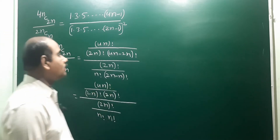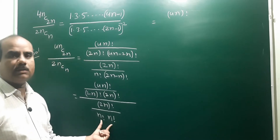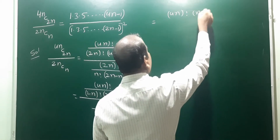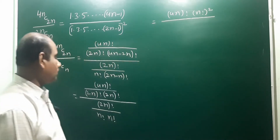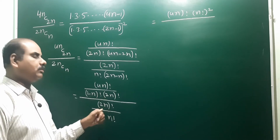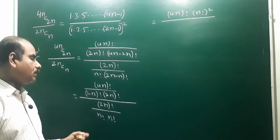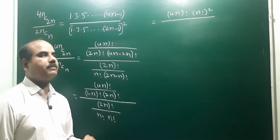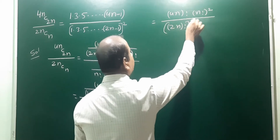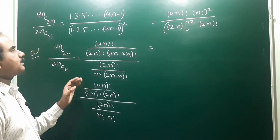Simplifying: the numerator becomes 4n! · n! · n!, and the denominator becomes 2n! · 2n! · 2n! — that is (2n!)³. We can rewrite this as 4n! · (n!)² in the numerator, and (2n!)² · 2n! in the denominator. So LHS = 4n! · (n!)² / (2n! · 2n!)².